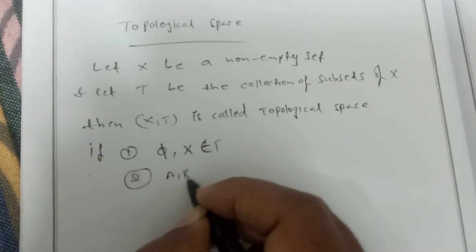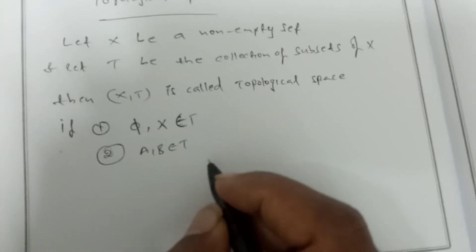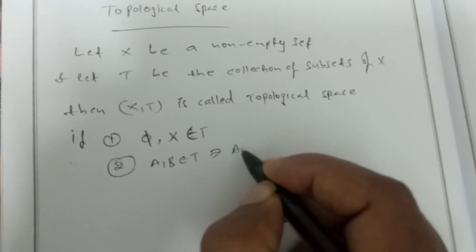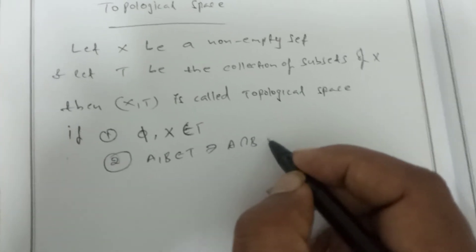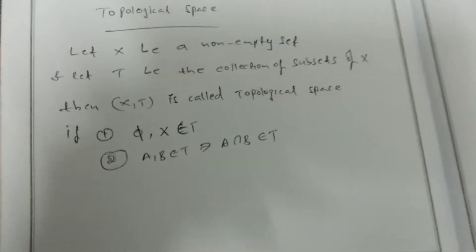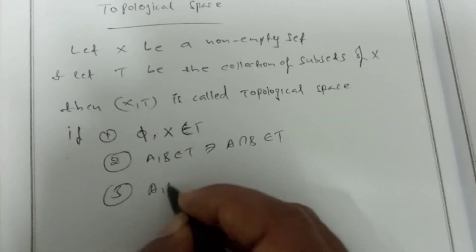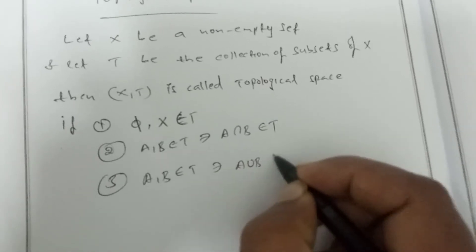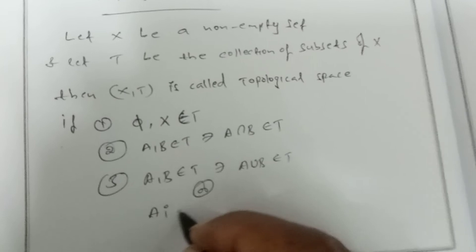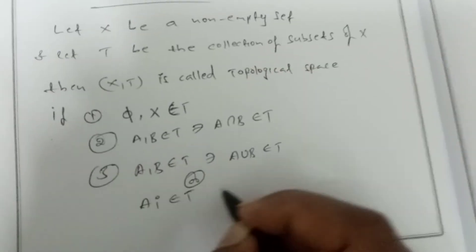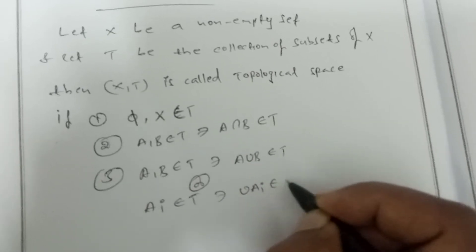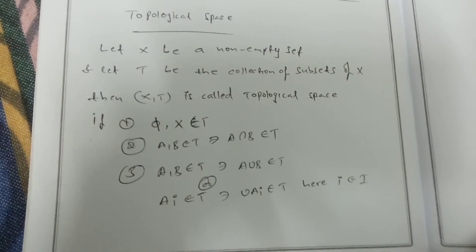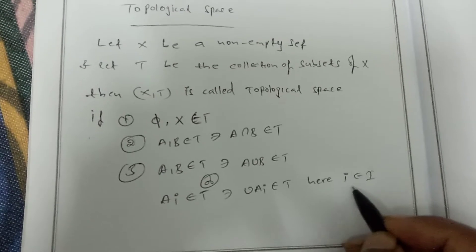Second condition: let A and B be any sets belonging to T, such that A intersection B belongs to T. Also, let A and B belong to T such that A union B belongs to T. Or more generally, if A_i belongs to T, then the union of A_i belongs to T, where i belongs to some index set — capital I is the index set and small i is any index number.